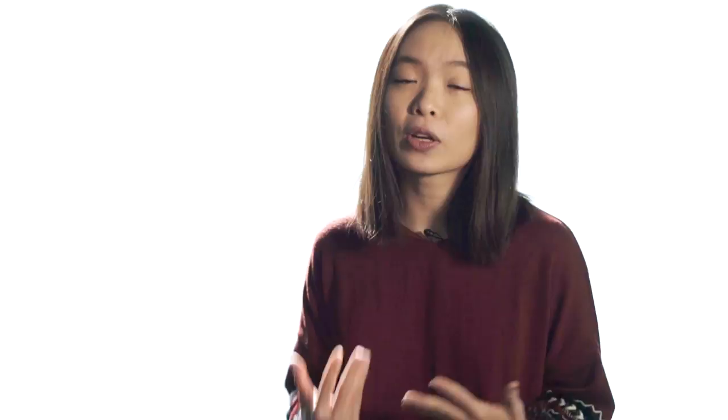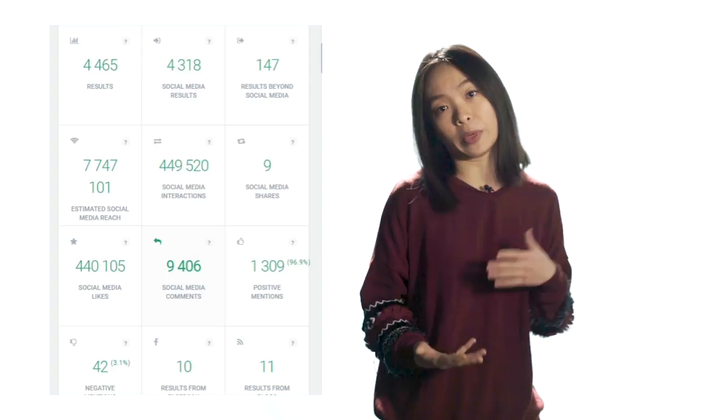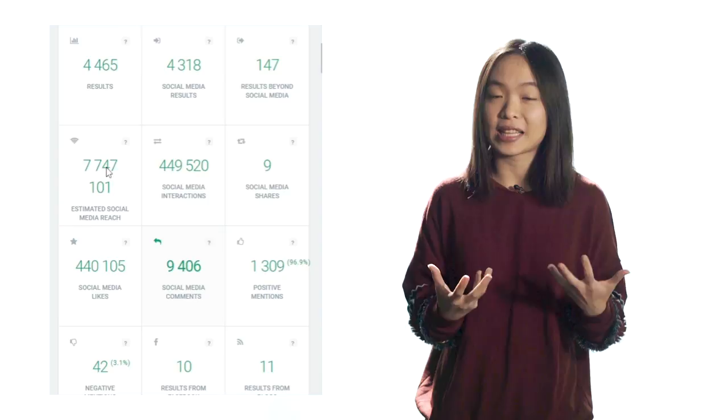Now let's say we're interested in interactions and what part of the audience commented on posts about Balenciaga's Triple S sneakers — these are not the real numbers for them, just an example. So just take the number of comments and divide it by the Social Media Reach. This can be a little scary, but this is the percentage of the audience that's actually engaged with your content for that goal. You can apply this formula to your other metrics of engagement to see how you're doing in other areas.